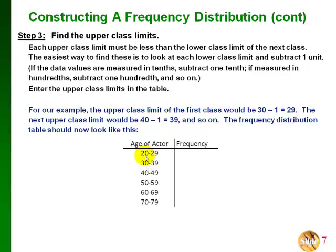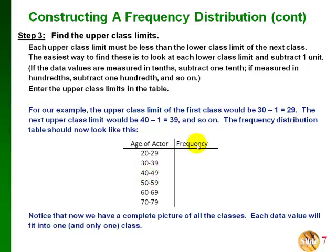A common mistake when constructing a frequency table is thinking that since the class width is 10, the first class would go from 20 to 30. However, if we did that, 30 would appear in two different classes, and we wouldn't know which class to put a value of 30 into. It is very important that your upper class limits and lower class limits are not the same values. Now we have a complete set of classes where each data value fits into one and only one class.